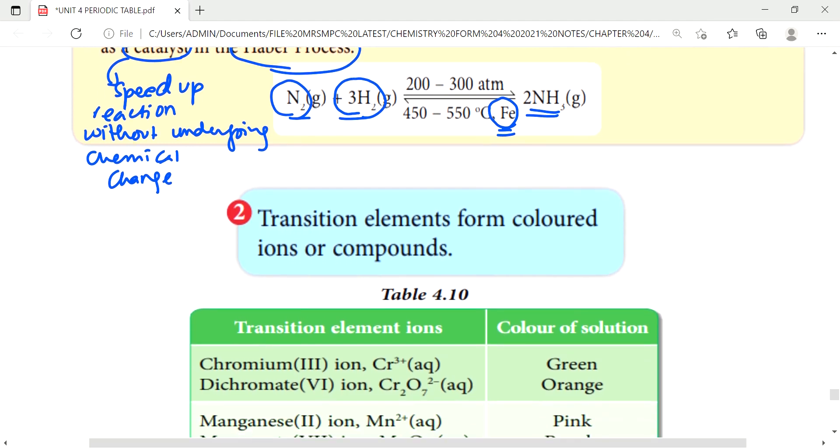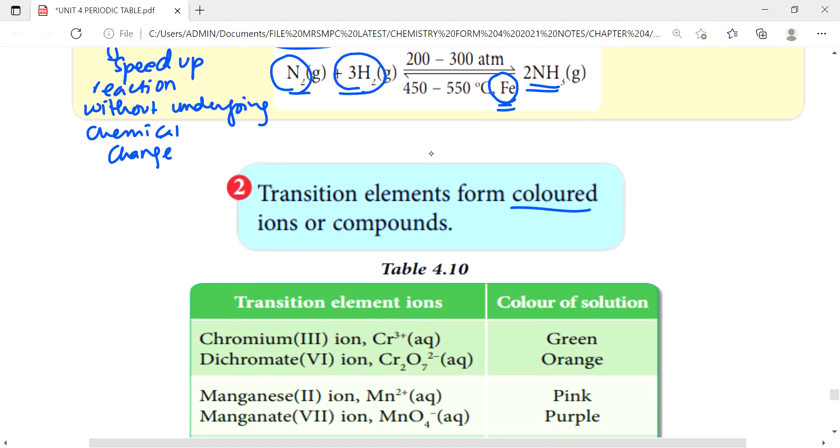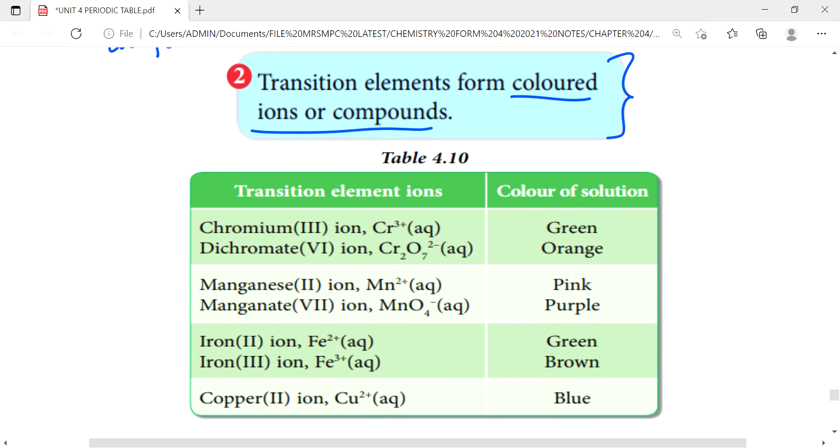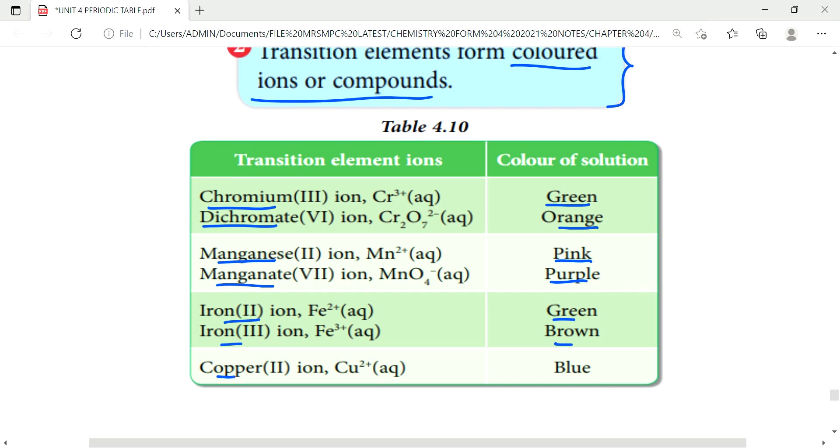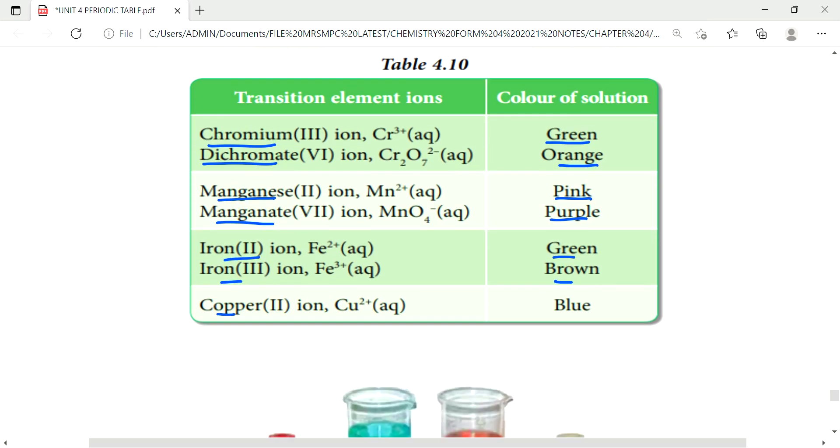Number two, transitions element form colored ions or compound. This is the famous answer written by students. When question asks what is the characteristic of transitions element, student likes to answer this. It has color. So for example, chromium has green color. Dichromate is orange. Manganese, all have beautiful colors. So that's what's special about transitions elements.